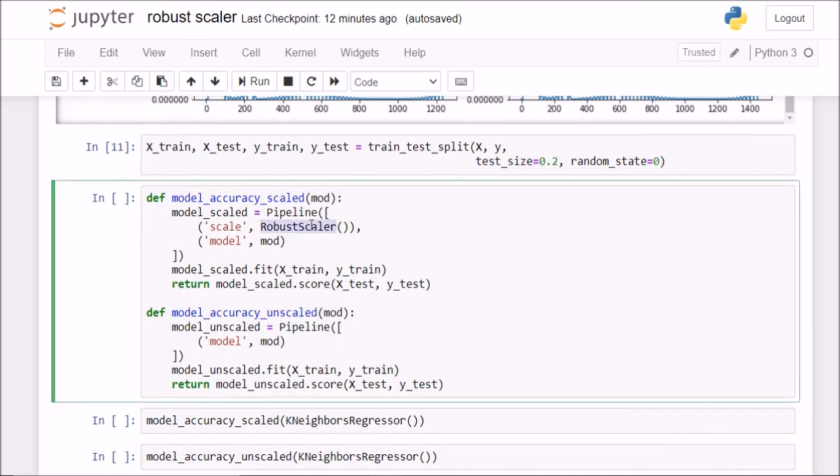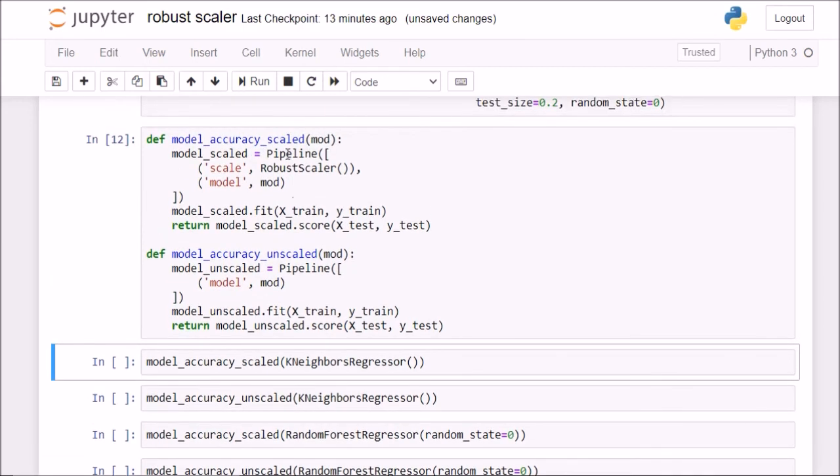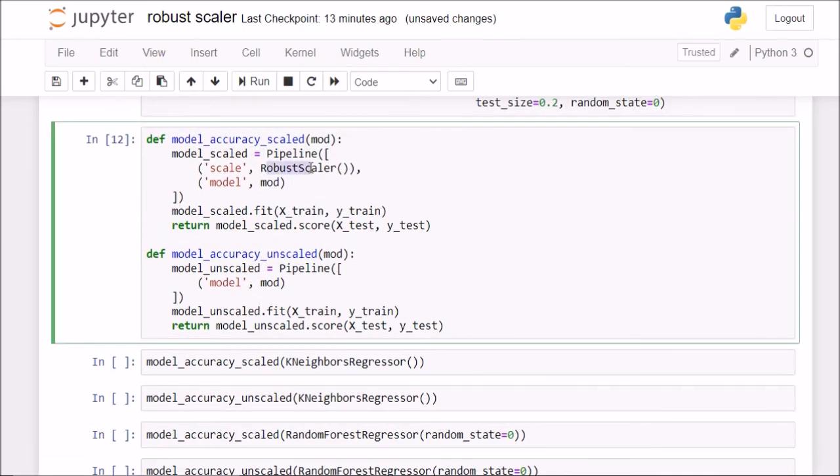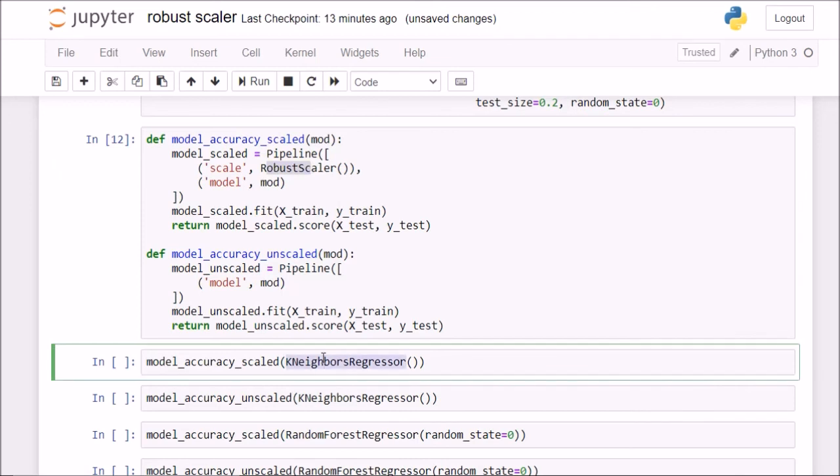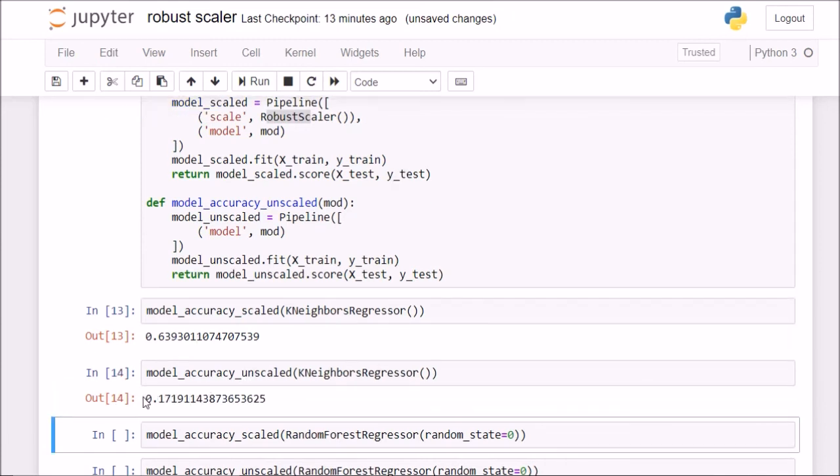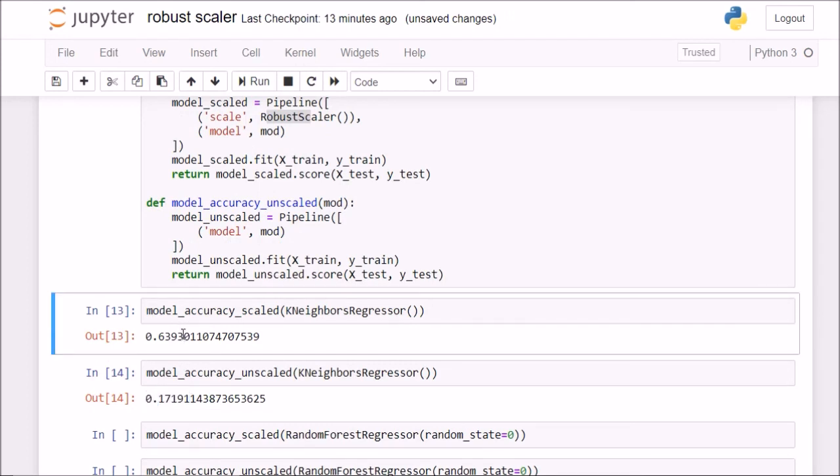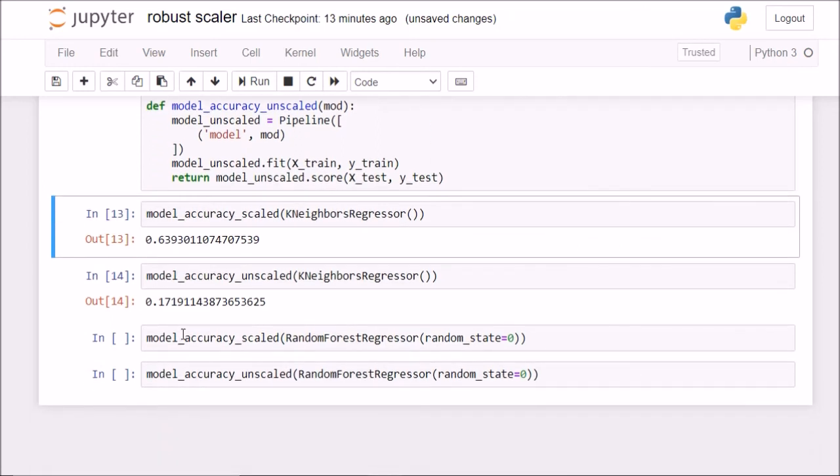Now after changing this pipeline value to RobustScaler, now we'll first check out our accuracy on after scaling our data using RobustScaler on k-nearest neighbors regressor which is a linear model. We get an accuracy of 63.93% and on unscaled data, we get an accuracy of 17% which is you see there is a stark difference here as well. So scaling is really important for linear models.